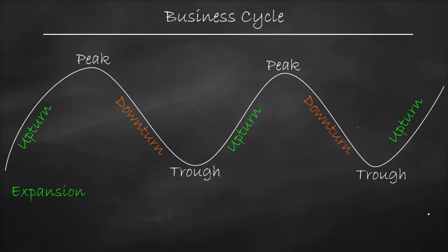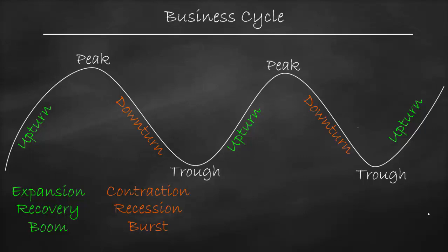The upturn we can call an expansion; the downturn we can call a contraction. We also have other synonyms for upturn, such as recovery. The synonym for downturn is called a recession. Another name for upturn is a boom; another name for downturn is a bust. Another name for upturn is growth; another name for downturn is decline.